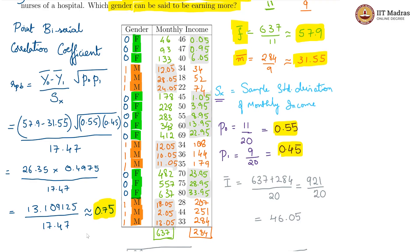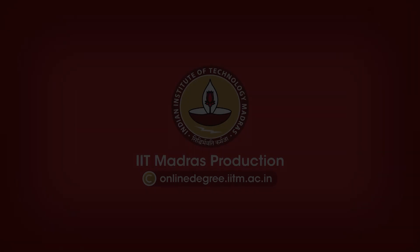0.75 is a fairly large correlation coefficient. It is very close to 1 and it is positive. There is a strong positive correlation between gender and monthly income. In that case, we can safely say that the female nurses earn better than male nurses in that hospital. Thank you.